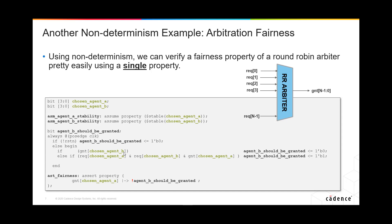That flag is set and cleared under varying circumstances. We clear the flag at reset, and if we have a grant for chosen agent b we clear it. If we have a request for agent a and also a request for agent b but there is a grant for agent a, then we're saying b should be next because a has just had a turn, so we set that flag. Our property says if we have a grant for agent a, it should mean that agent b is not marked as being granted - i.e. that flag is not set.